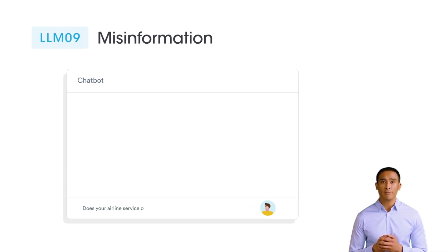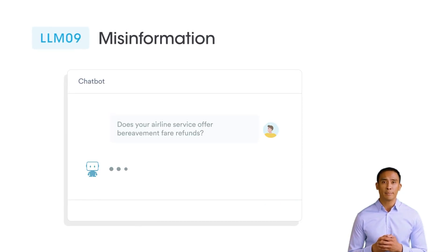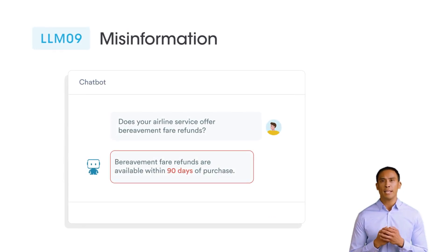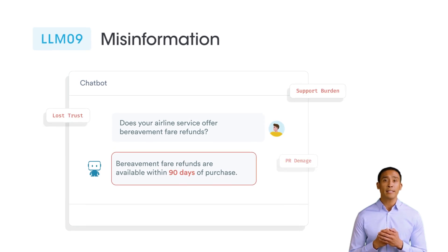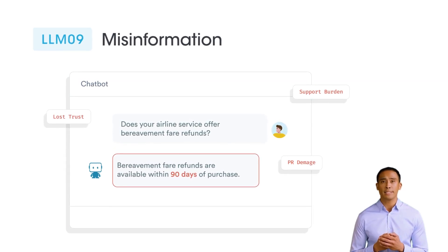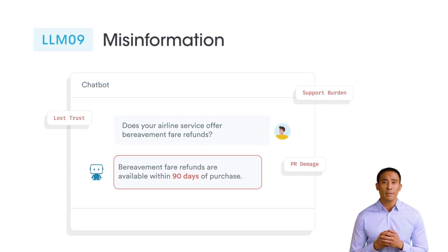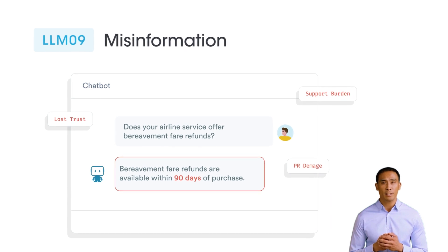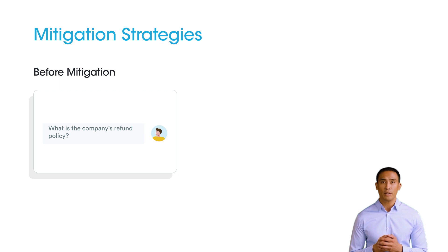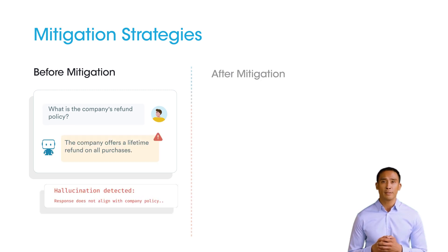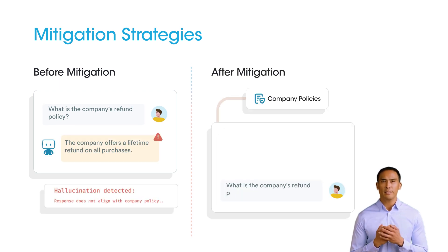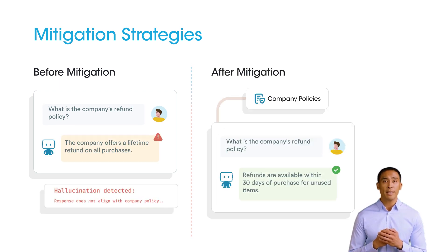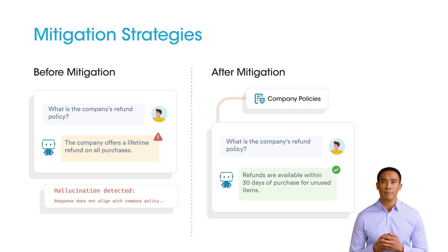Misinformation refers to generating false or misleading information that seems credible but lacks factual accuracy. Example: Air Canada's chatbot wrongly stated that bereavement fare refunds were available within 90 days, contradicting company policy. Ground LLM outputs in trusted, verified internal knowledge bases to prevent hallucinations. Assess and select models based on industry benchmarks like Stanford HELM. Remove redundant or obsolete data from workflows to enhance response accuracy.